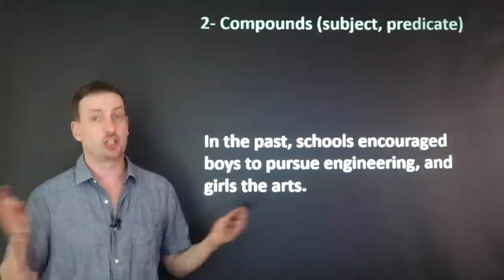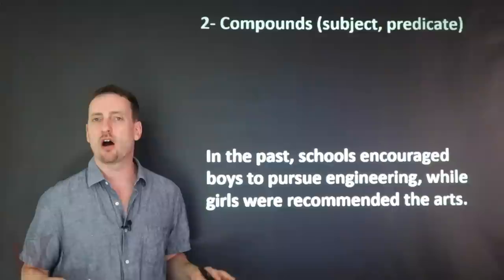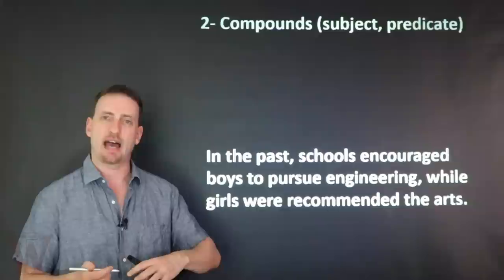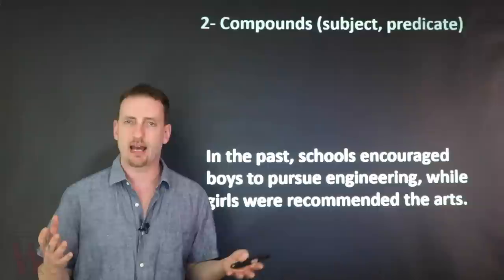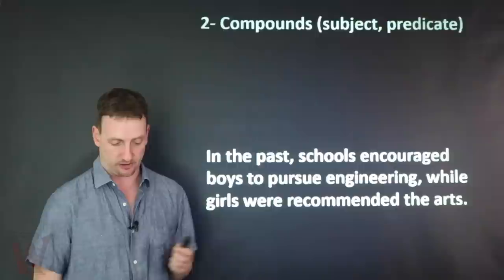If you're not sure your sentence is clear, change it. For example: 'In the past, schools encouraged boys to pursue engineering, while girls were recommended the arts.' No confusion — it's now a complex sentence with an adverb clause instead of a coordinating conjunction. You get an active verb and a passive verb, vocabulary variety, sentence structure variety, and correct comma use with the adverb clause.